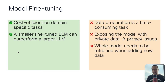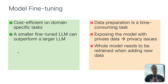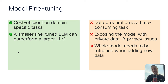Fine-tuning is definitely cost-efficient on domain-specific tasks. Importantly, a smaller fine-tuned LLM can outperform a larger LLM — a small language model fine-tuned for a specific domain will definitely outperform much larger models like OpenAI's. On the limitation side, data preparation is a time-consuming task — you need to prepare quite a lot of data for the dataset. When you use your own data, you can't fully control which data leaves the model and which stays inside, which can lead to privacy issues depending on where the data comes from. And finally, the whole model needs to be retrained when adding new data — this speaks more in favor of RAG. If you are frequently changing data, RAG might be a more cost-efficient solution.